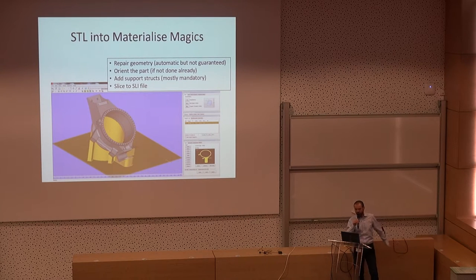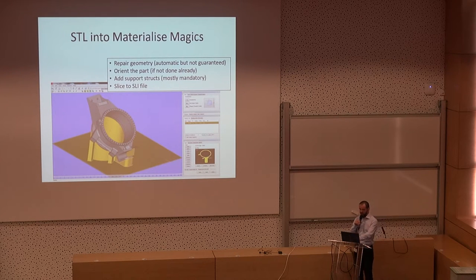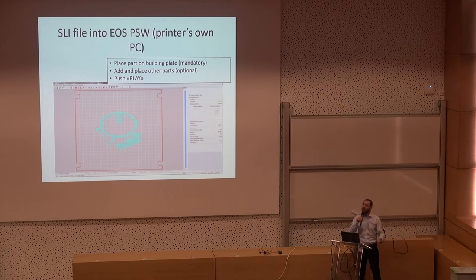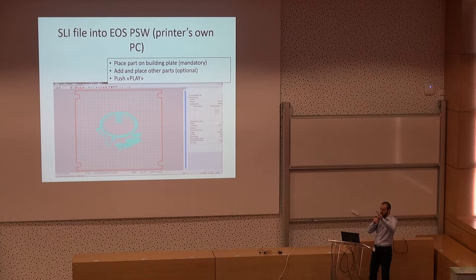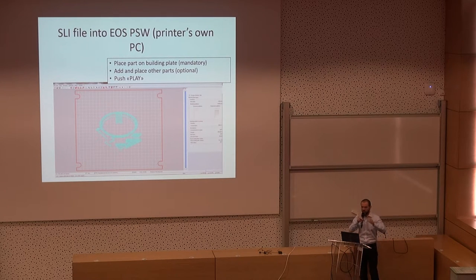If orientation was not completed in the previous software, it must be done in Materialise Magics, along with adding support structures — which is described as a sort of art in this kind of manufacturing technology. Then the model is sliced. The resulting slices are transferred to another software on the printer's PC, where they are positioned in the build chamber and printing is initiated.